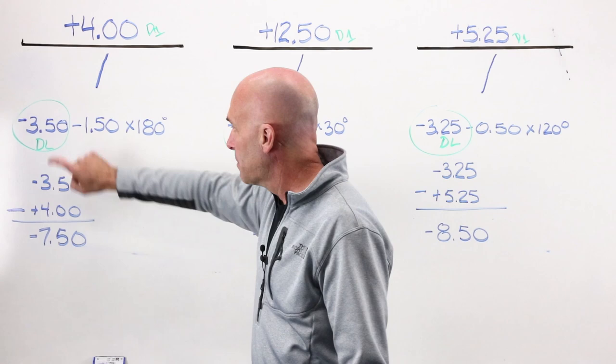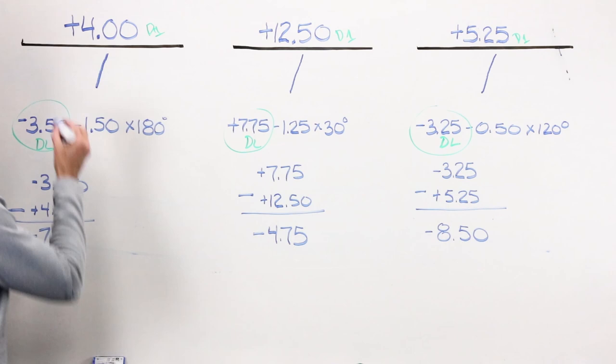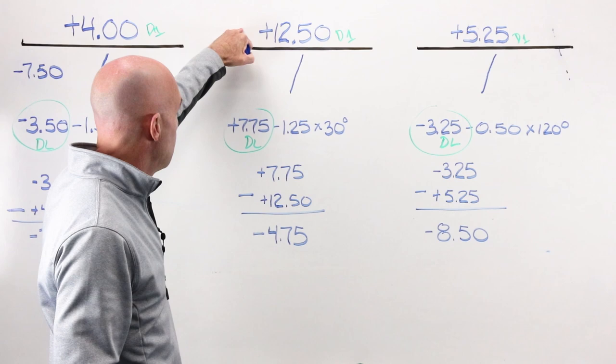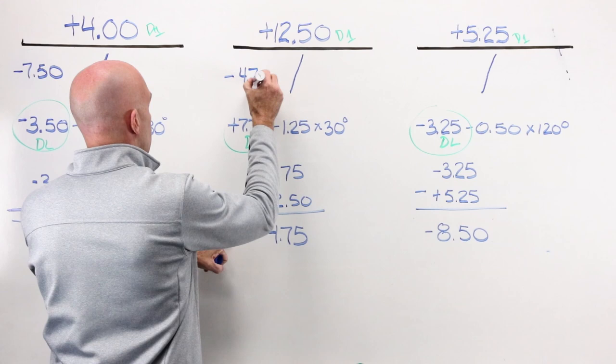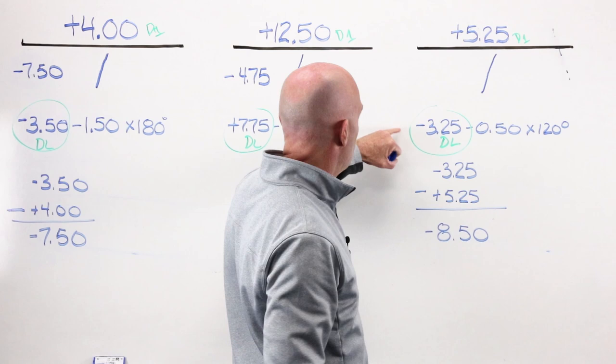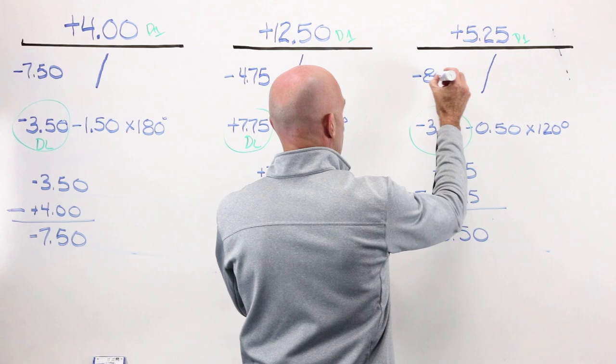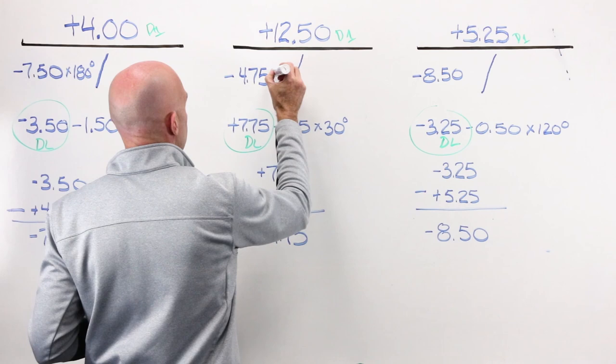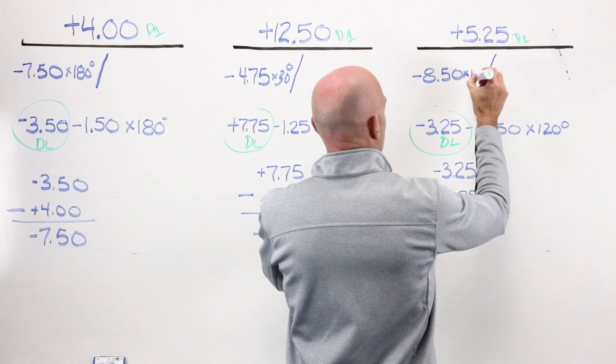If I do, in fact, take my power and I subtract my base curve, my sphere curve is going to be a minus 7.50. If I take my sphere power and I subtract away my base curve, my sphere curve is going to be a minus 4.75. If I take away my power from my base curve, I end up with a minus 8.50. I end up with it at 180 degrees, I end up with it at 30 degrees, and I end up with it at 120 degrees. We are not done.